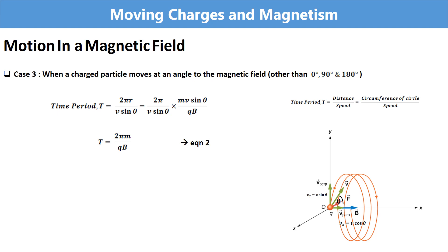Next is frequency. It is the reciprocal of time period, and Equation 3 represents the equation for frequency.